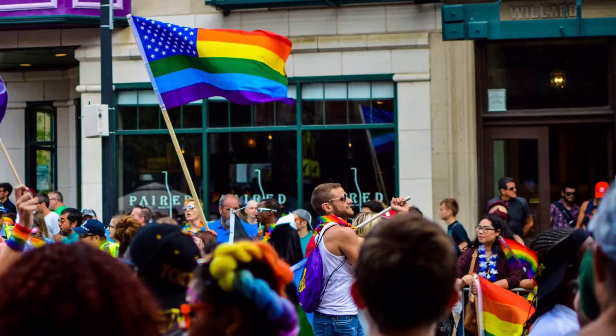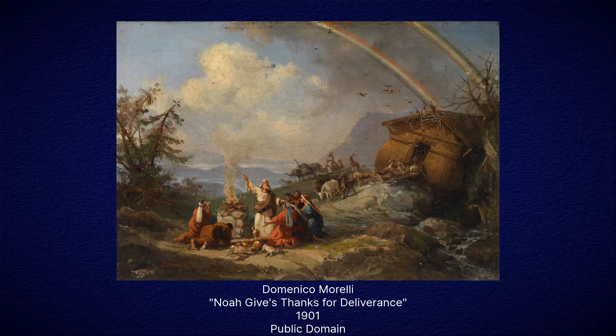The origin of this positive imagery largely comes from the Bible. According to interpretive tradition, the rainbow was the sign of God's covenant with Noah, and by extension with all of humanity, to not destroy the world by flood.